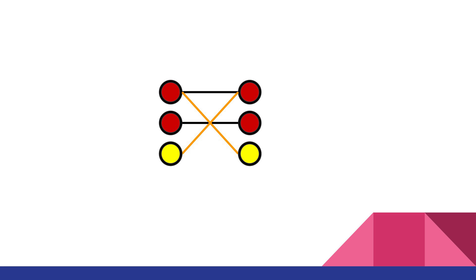Here is a visualization to help you understand the concept. This is a matched bipartite graph that we will be trying to find an augmenting path for. Highlighted are unmatched vertices. First traverse from the unmatched vertex on the left via an unmatched edge and then alternate edge type traversing via a matched edge. We then alternate again traversing via an unmatched edge. We keep alternating until we finally find an unmatched vertex. If we don't finish at an unmatched vertex, we can say there are no augmenting paths.